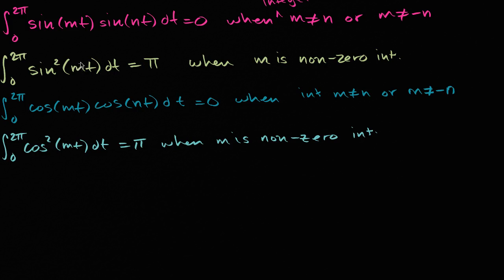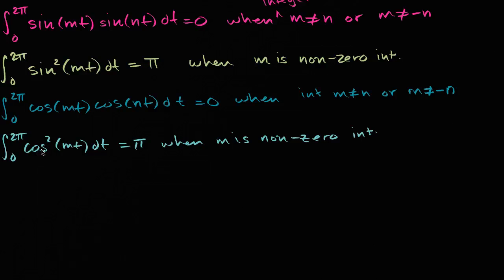Now what we want to do in this video is do the same thing we did in the last video, but now do it for cosines. The product of two cosines where m and n are different integers, or they're not the negative of each other, is going to be zero. But if they are the same integer and they are not zero — so that will boil down to cosine squared of mt — that definite integral is going to be equal to pi.